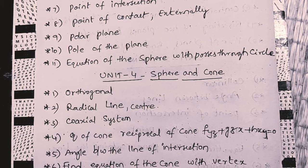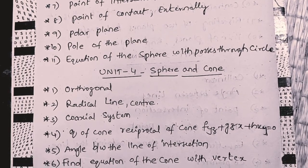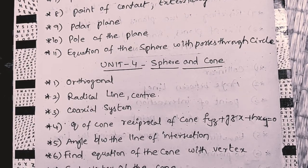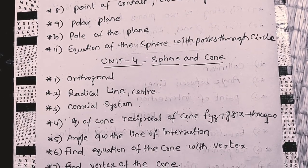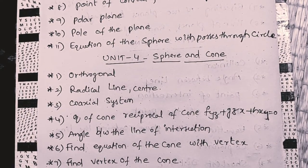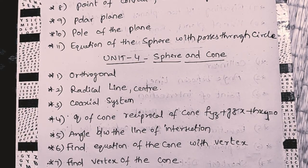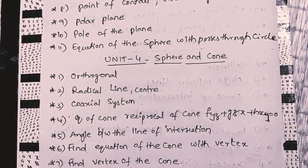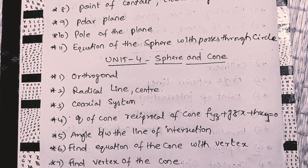Angle between the line of intersection. First of all, we observe the angle between. Find the equation of the cone with vertex. And last question, find vertex of the cone. So, question number 3 and 7. 10 marks point of view, very, very important. Coaxial system and find vertex of the cone.